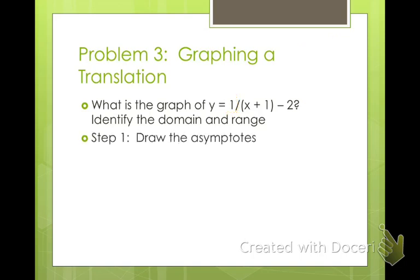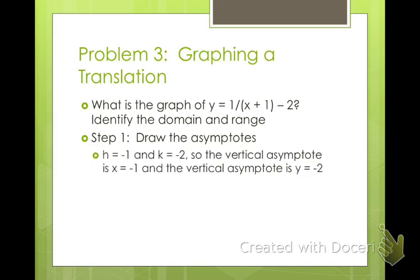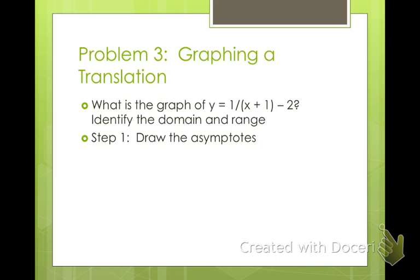So let's start by drawing our asymptotes. And if it moves it left 1 and down 2, our new asymptotes are going to be here. There we go. That x equals negative 1, and y equals negative 2. So these are our new asymptotes. Now we just need to fill in those branches. So just pick some values.